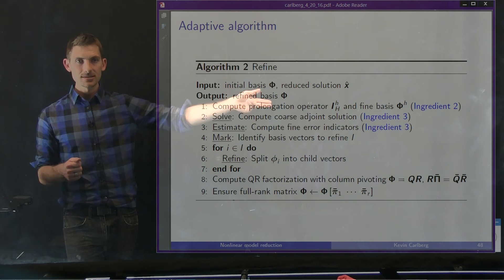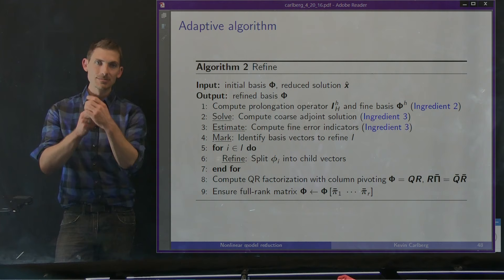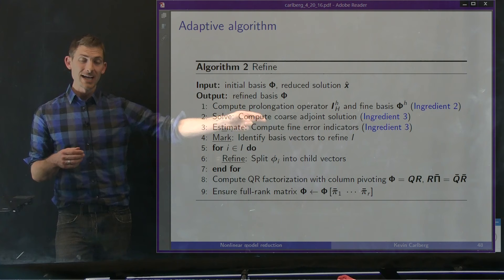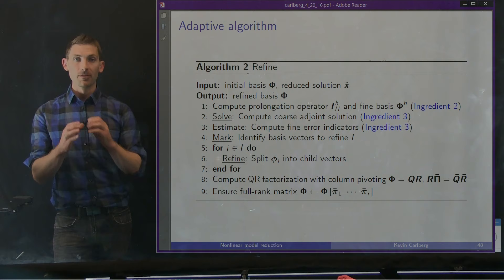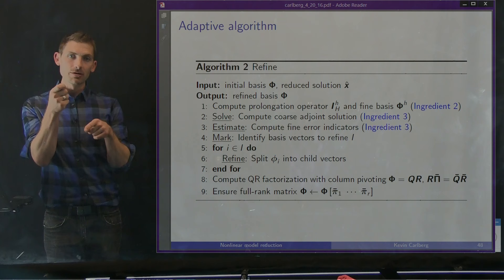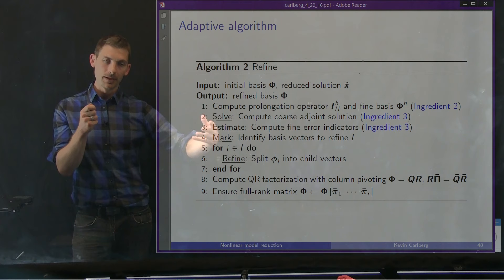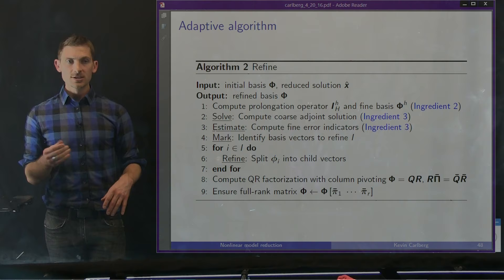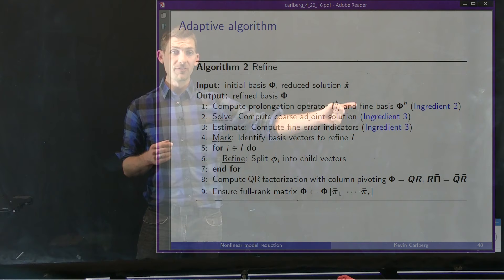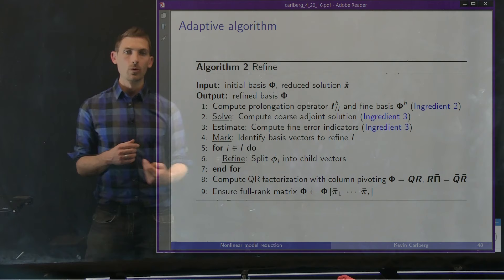In the refine step, starting with an initial basis and current solution, we output a refined basis. We first compute a prolongation operator and a fine basis — the current basis split according to our procedure. We then compute a coarse adjoint solution and use it to estimate error indicators tied to the fine basis. We mark the vectors we want to split based on those indicators, refine by splitting them, and may apply QR factorization with column pivoting to remove possible rank deficiency from our basis.